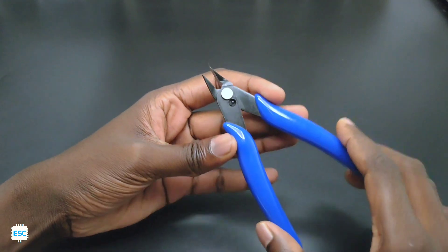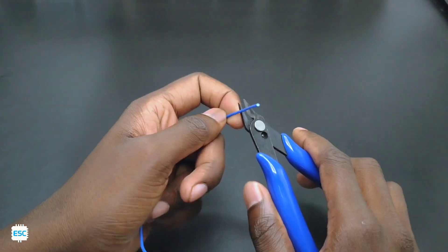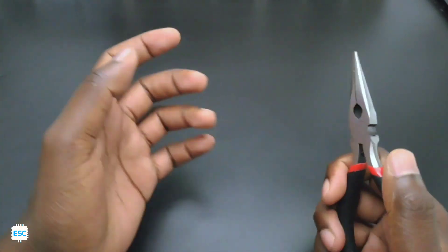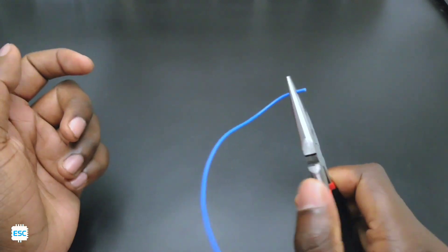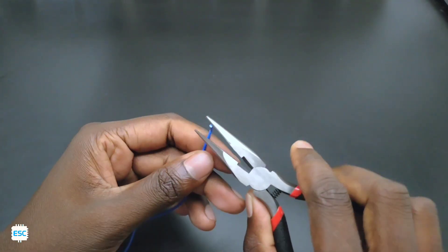Now let's check each tool closely. First we got this decent quality wire cutter. As the name indicates it's used to cut wires and cables. Next we got this nose plier. This is a multipurpose tool which is usually used to grab or bend something. Also we can cut wires with this.